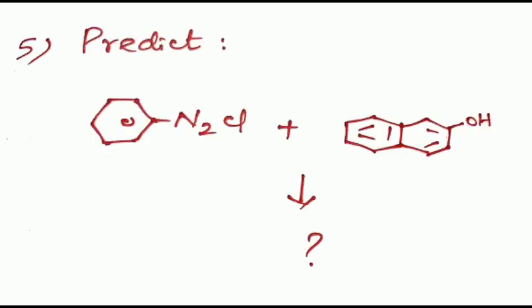Question five: predict the product when benzene diazonium chloride combines with 2-naphthol. Coupling always takes place at the ortho and para positions relative to the hydroxyl group.